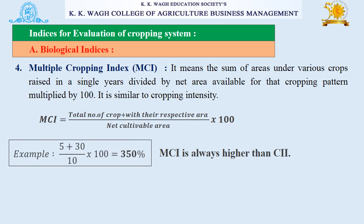The next index for evaluation of cropping system is multiple cropping index (MCI). It means the sum of areas under various crops raised in a single year divided by the net area available for that cropping pattern, multiplied by 100. It is similar to cropping intensity. MCI equals the total number of crops with their respective areas divided by net cultivable area, multiplied by 100. Multiple cropping index is always higher than CII.